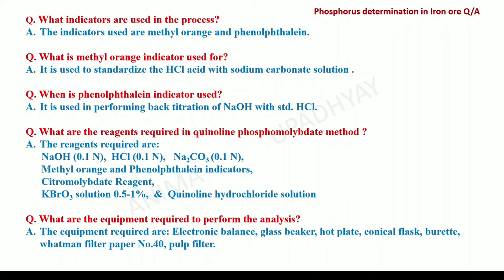What are the indicators used in the process? The indicators used are methyl orange and phenolphthalein. Methyl orange is used to standardize the hydrochloric acid with sodium carbonate solution. Phenolphthalein indicator is used in performing the back titration of sodium hydroxide with standard hydrochloric acid. What are the reagents required in the quinoline phosphomolybdate method? The reagents required are solutions of sodium hydroxide, hydrochloric acid, and sodium carbonate, all 0.1 normal; indicators such as methyl orange and phenolphthalein; citromolybdate reagent; potassium borate solution 0.5 to 1%; and quinoline hydrochloride solution.